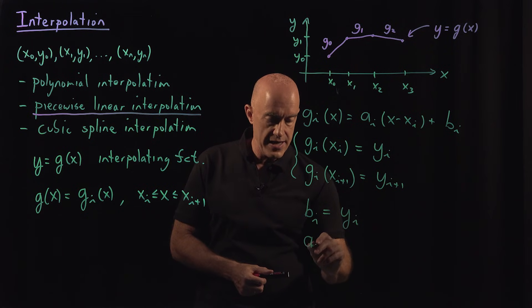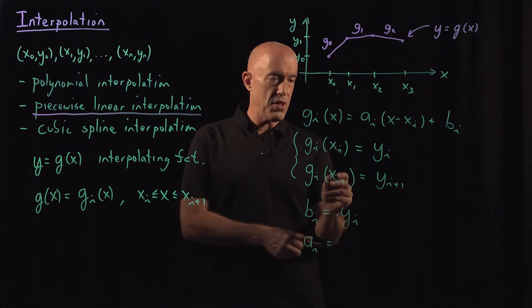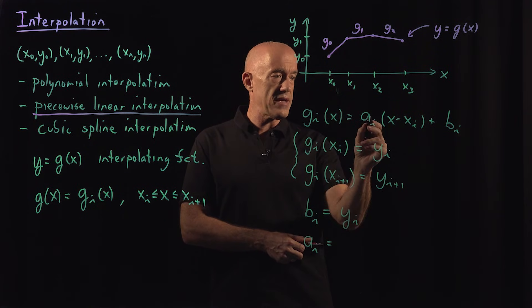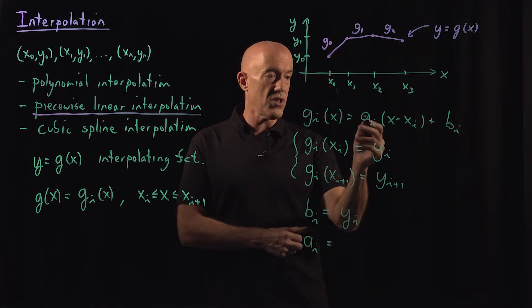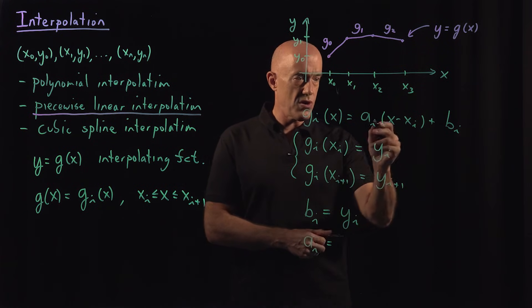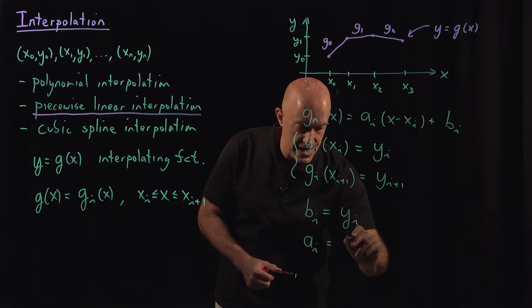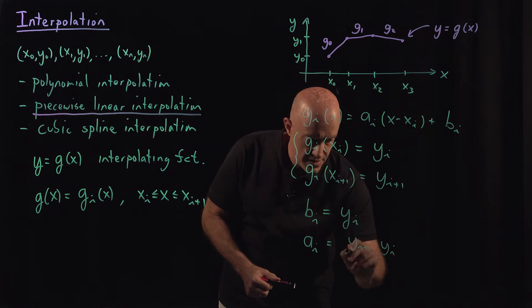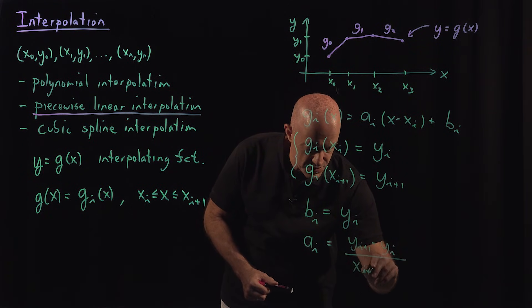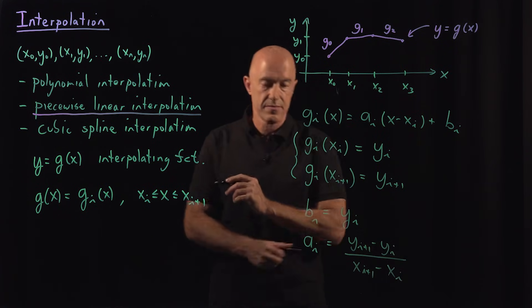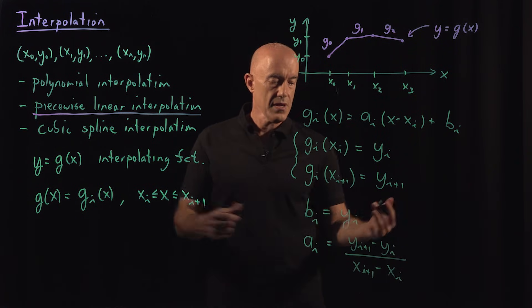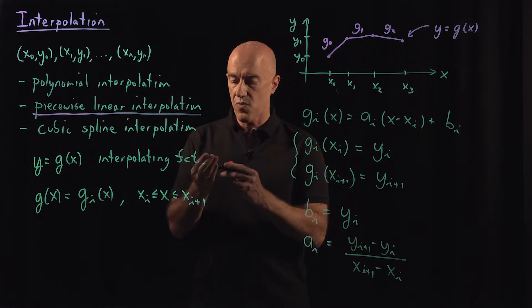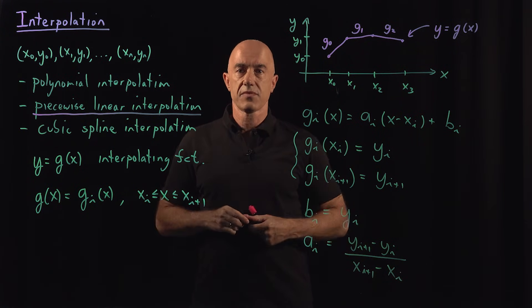So here we have a b i. We plug in x i here. So we get b i equals y i. And then we can get a i. We plug in x equals x i plus one. But we know that this is a slope. A i is a slope. So this one will have to be the slope. So it will have to be y i plus one minus y i over x i plus one minus x i. So we've determined the a's and the b's in terms of the data, x, y. So let me summarize.